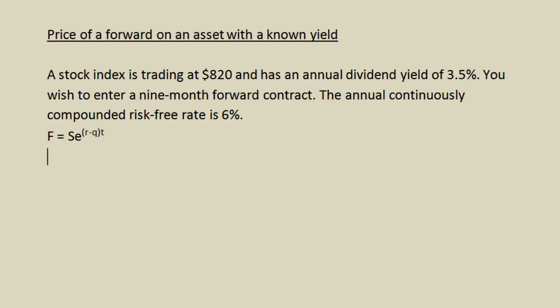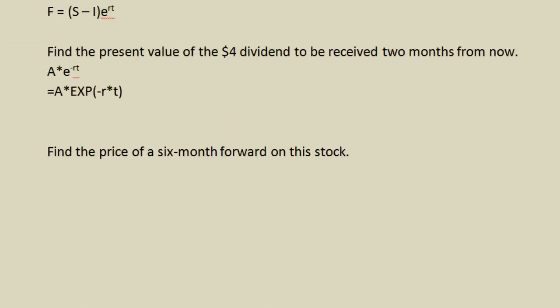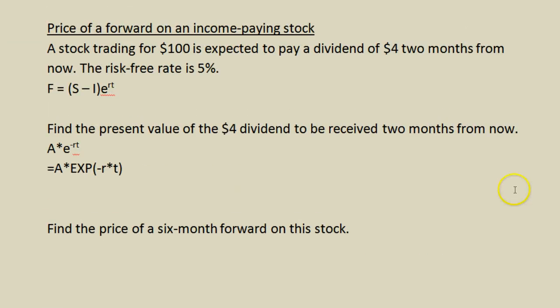Hello everyone, Jeff here with an example of finding the price of a forward contract on an asset that pays a known yield. In this example, we have a stock index currently trading at $820 with an annual dividend yield of 3.5%. This may sound familiar, so in order to put this piece together in the puzzle, we'll go to something else we have covered, which was finding the price of a forward on an income-paying stock.